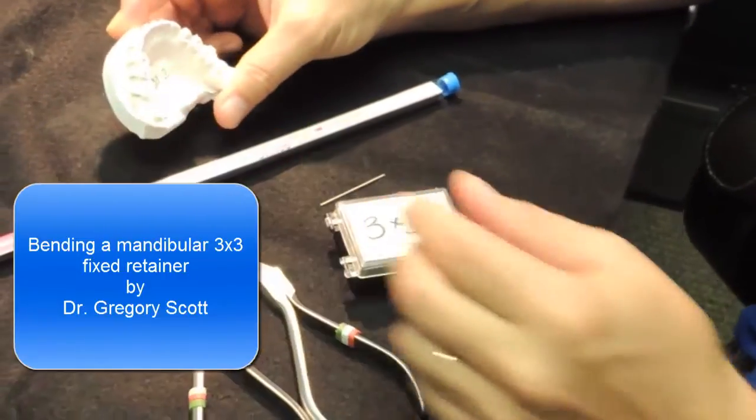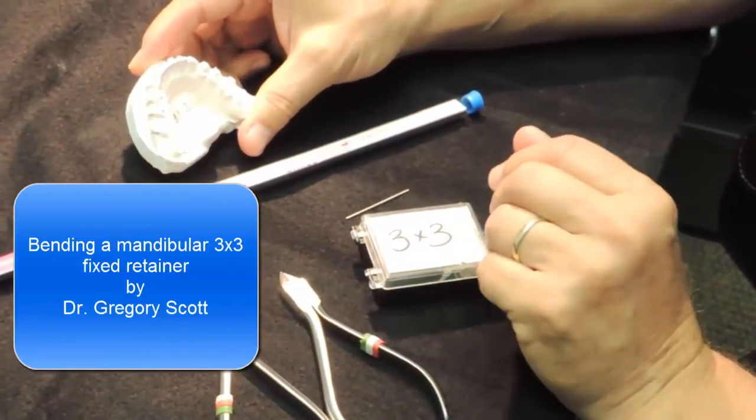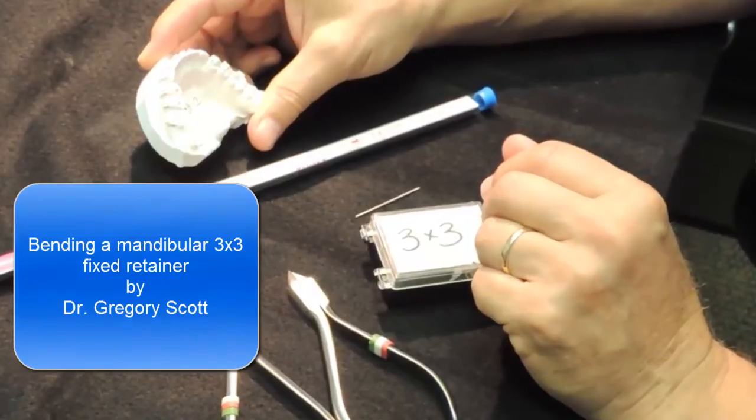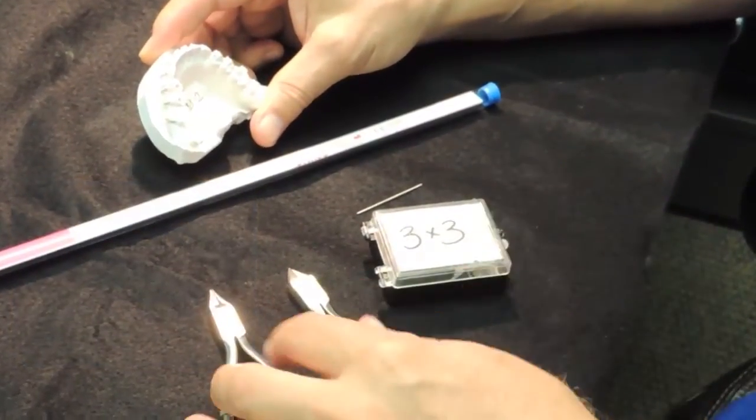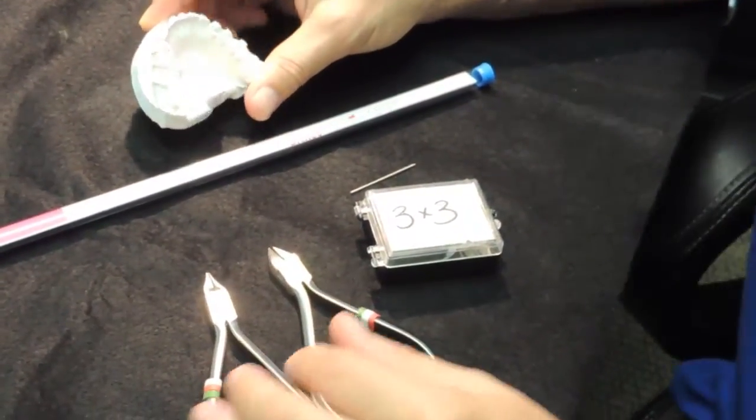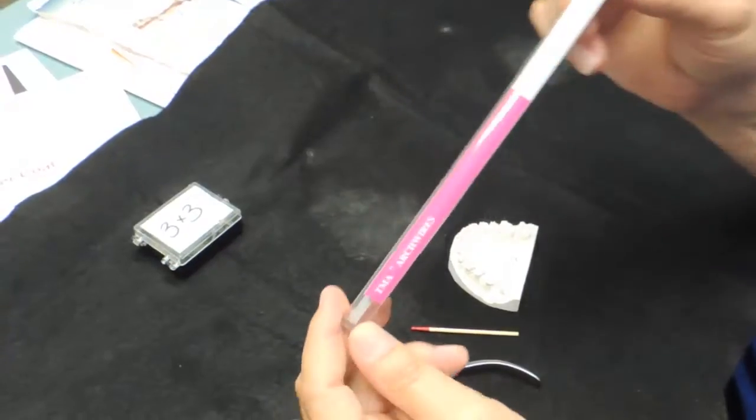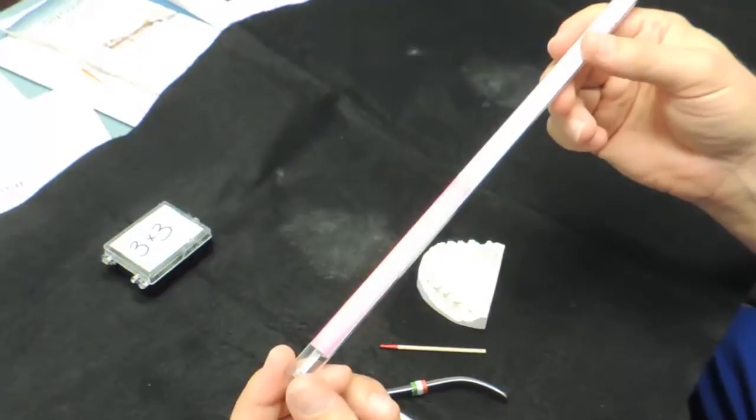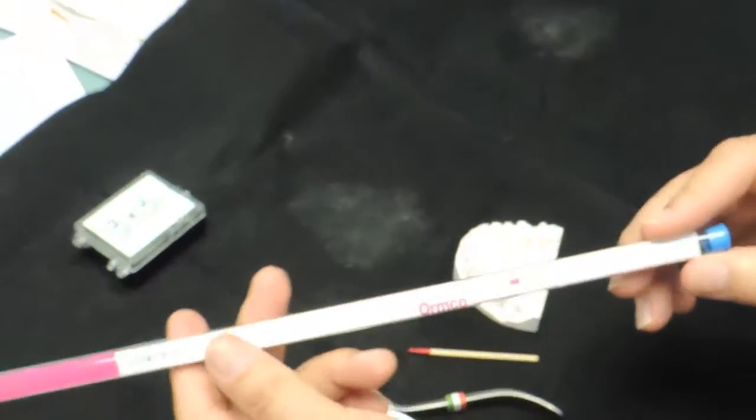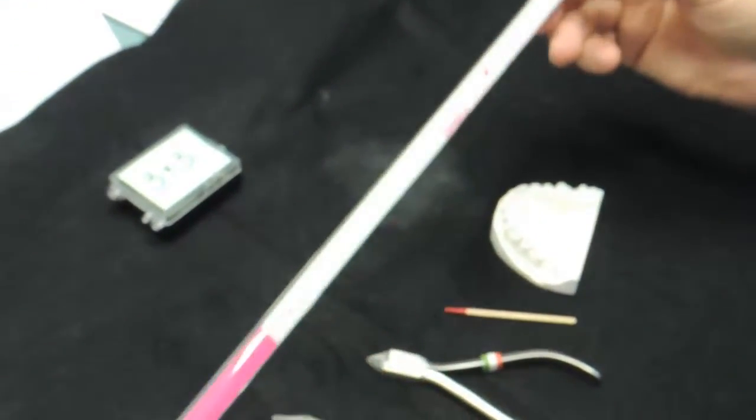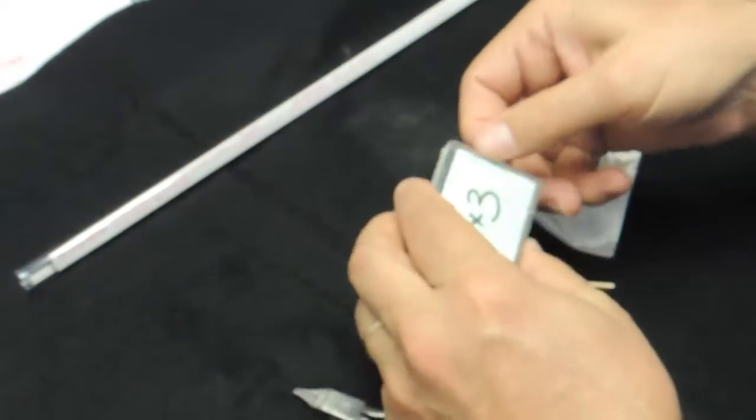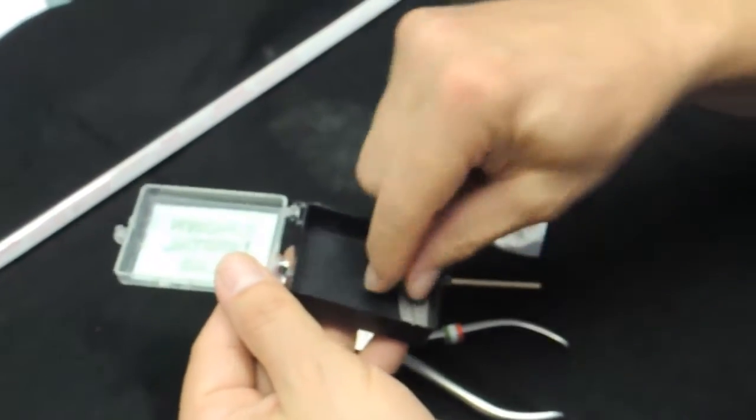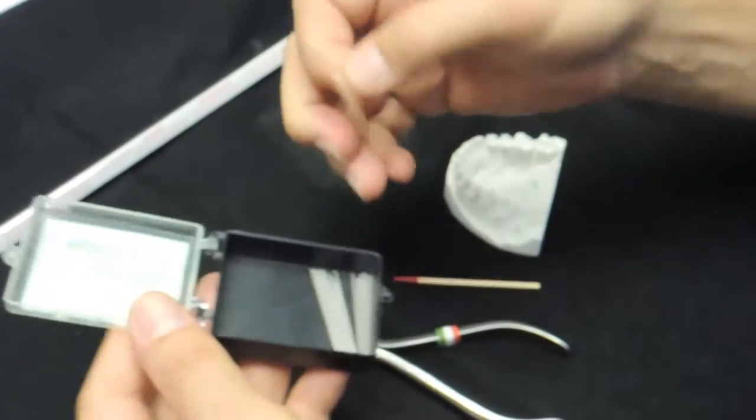This is a short instructional video on how to bend a lower 3x3 fixed retainer bonded only to the cuspids. For that we use TMA arch wire. It's an 032 TMA arch wire that we get from Ormco in long lengths. We cut those lengths just to have a supply, cut them short and keep them on hand.